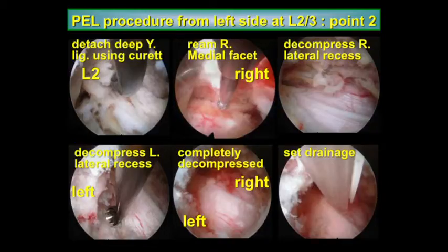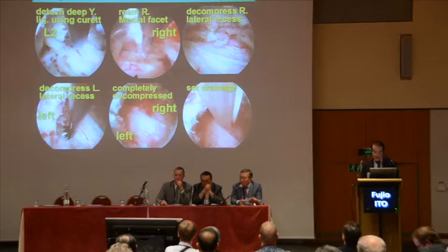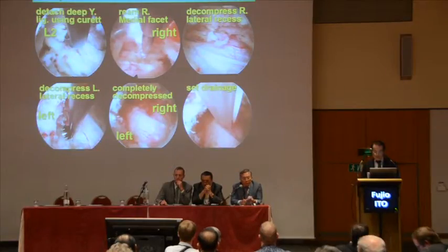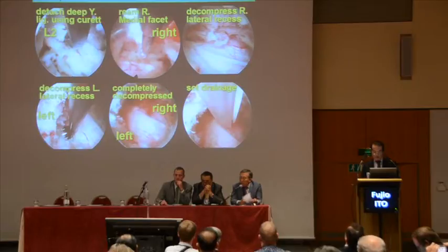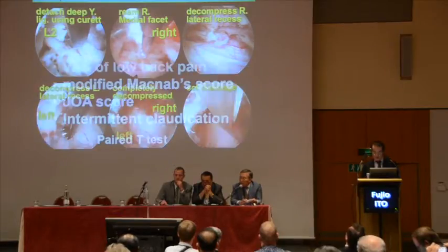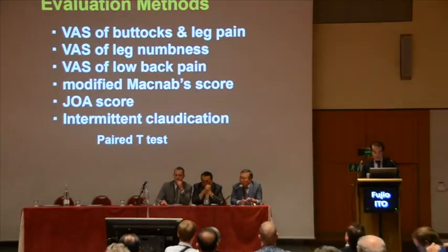Next, on the opposite side, trim the right medial facet. Decompress the lateral recess. Then decompress the left lateral recess. After both sides are decompressed, set the drainage tube in place.